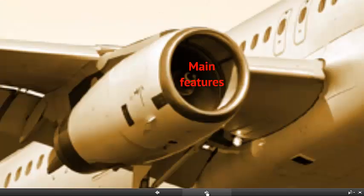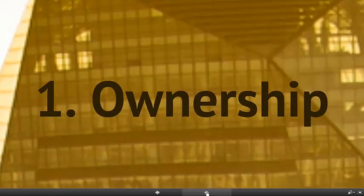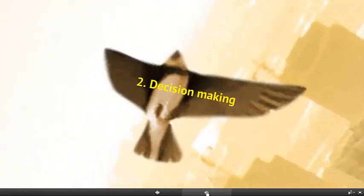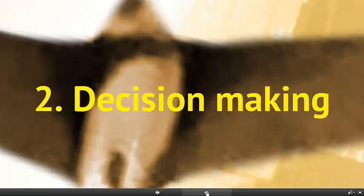So what are the main features of economic systems? First of all, ownership — who has control of all the resources, namely capital, labour, enterprise and raw materials? And also, who makes those decisions? Who makes the decisions to put all those resources into production to make goods and services for consumers and everybody else?